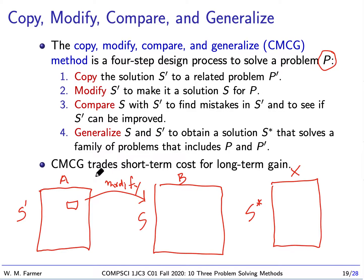So the important thing here is that this approach, the CMCG approach, it trades short-term cost for long-term gain. What is the short-term cost? When I get B, I go back and compare it to A and then I produce this X. But the thing is, X now is a more powerful template than I ever had before. And I can use it for solving future problems where I have to apply to future companies. Okay, so that's the idea. We start, we copy, modify, compare, and generalize.